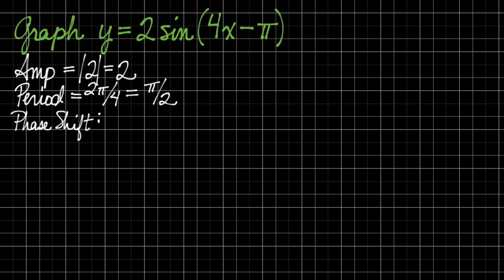Now the phase shift, I can tell that this graph is shifted to the right, but by how much? And how should I draw it? So my personal hack for this is I take that expression in the parentheses and I set it equal to 0 and I solve. That's where I'm going to begin drawing every single time.